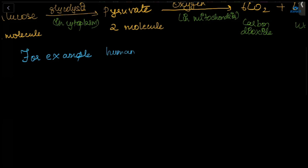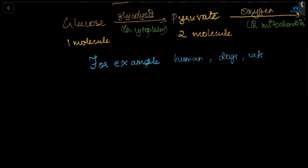Aerobic respiration occurs in humans, dogs, cats, earthworms, snakes, fish, insects, and also plants.